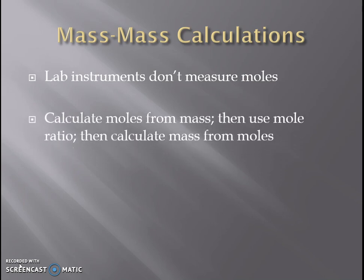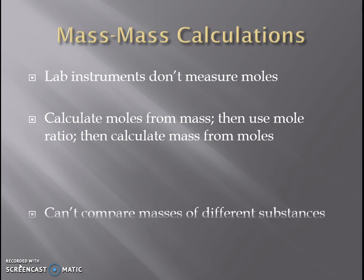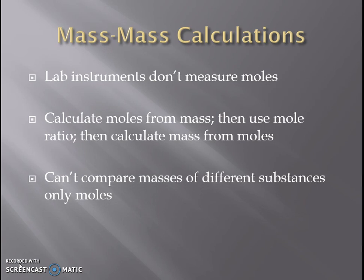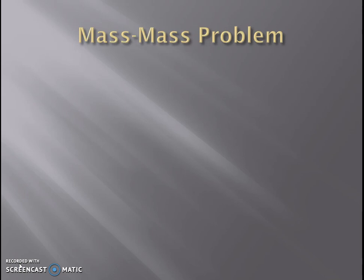In order to do that, we're going to take the mass that we would measure, change that into moles using molar mass, then use the mole ratio to get to the different substance we're looking at, and then take those moles and change them into grams for that substance. It's not really useful to compare masses of one substance directly to another because they have different molar masses. Keeping it in three different smaller steps makes it a lot simpler. Let's take a look at that process, breaking it up into smaller pieces.